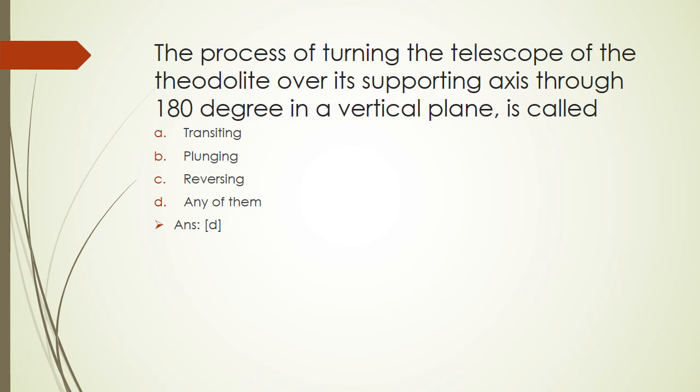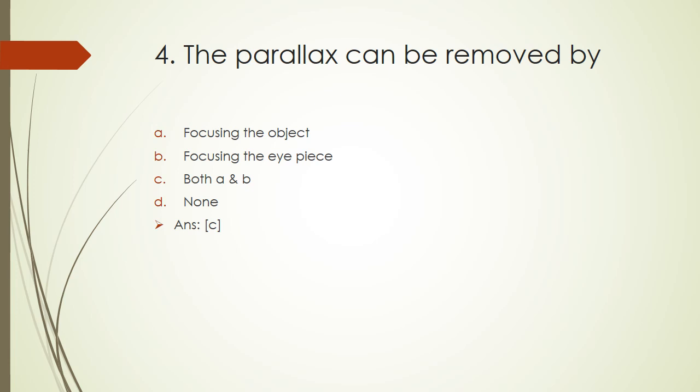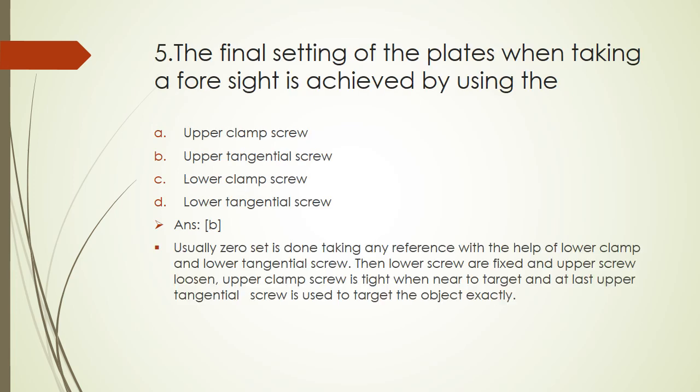Question 4: The parallax can be removed by: focusing the object, focusing the eyepiece, both a and b, or none. The right answer is both a and b. Parallax, the problem that arises in the observation of the object in a telescope, can be removed by focusing the object or by focusing the eyepiece.